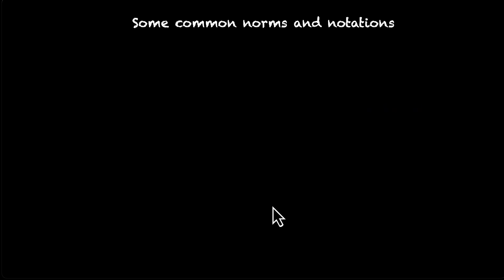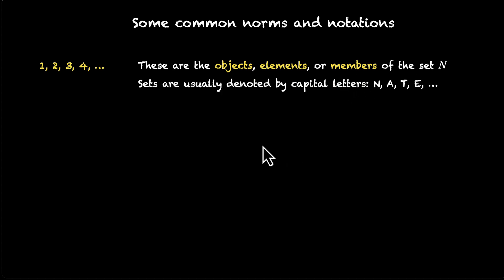Let's finally look at some common norms and notations before we move on to the rest of the chapter. 1, 2, 3, 4, well they are part of the natural number set. But what are they called? Well, they have many names. We call them objects, elements or members of the set N. All three of them mean the same thing. Also, sets are usually denoted by capital letters. This for example is a set of natural numbers and we denote it with a capital letter N, not the small letter N. We reserve the small letters for their elements.